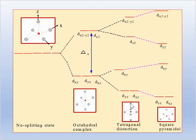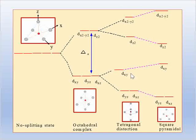With tetragonal distortion, the two ligands in the z direction move farther away. So the dx²-y² orbital, which lies along the x and y axes in the xy plane, will have the highest energy. Because four ligands are in the x and y direction, the elongation in z means z-related orbitals have lower energy, and dx²-y² has the highest energy.